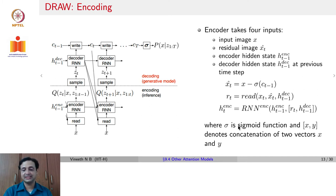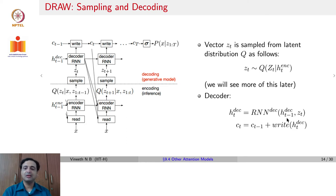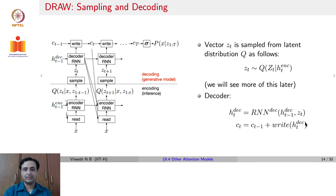For the decoder, there is a sampling step (which we will discuss with variational autoencoders). A vector is sampled and passed to the decoder RNN, which uses the decoder hidden state from the previous time step and the sample from what we call the bottleneck layer of the VAE. The canvas at time step t is then updated as the canvas at the previous time step plus the output of the write module at that time step. This is the overall functioning of the DRAW framework.